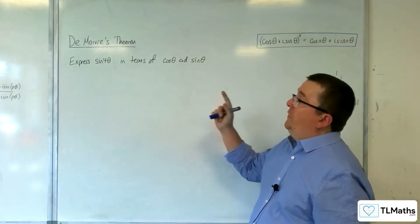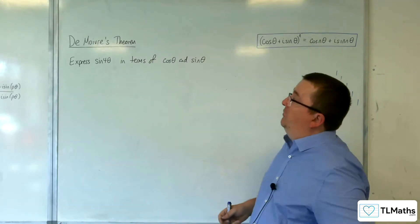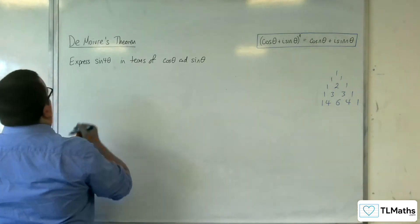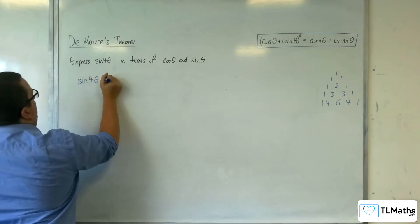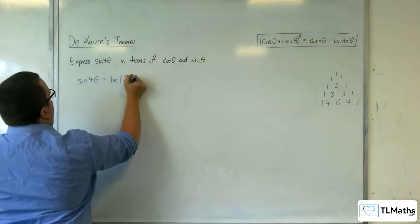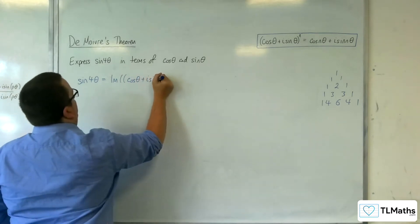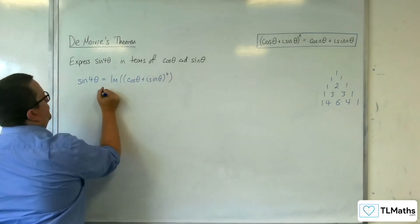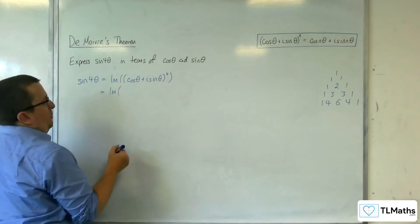In this video, we're going to express sine 4 theta in terms of cosine theta and sine theta. So sine of 4 theta is going to be the imaginary part of cosine theta plus i sine theta to the power of 4. Using binomial expansion,